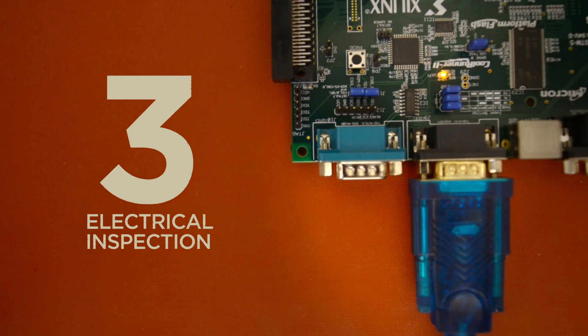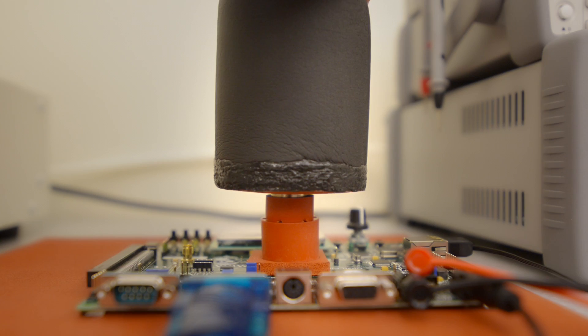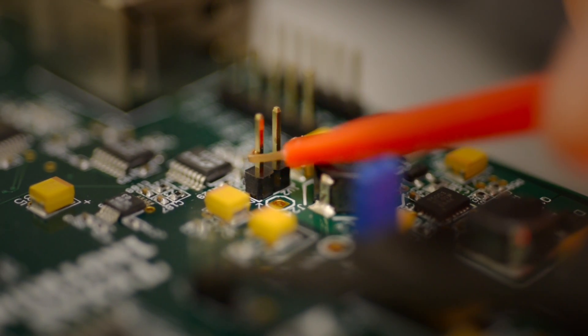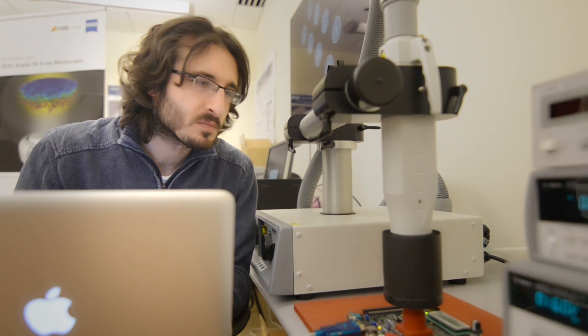Step 3 is an electrical inspection. We take the chip and test its performance, looking for abnormalities in its behavior and indicators that the chip has been tampered with.